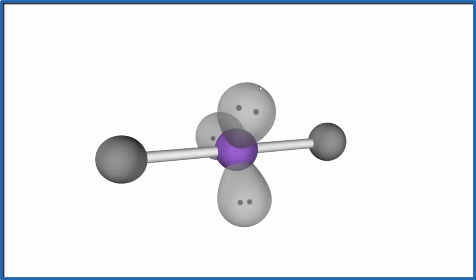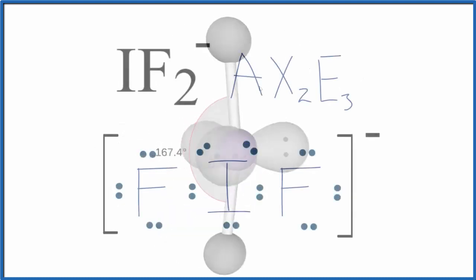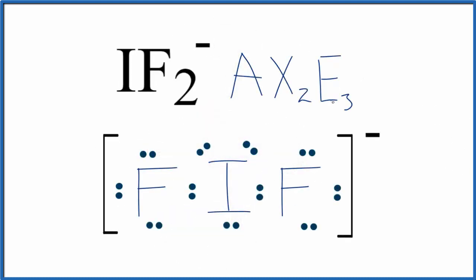Our molecular geometry, we have a linear molecular geometry. Bond angles, 180 degrees. Let's go back to our Lewis structure. So to recap, when we have two atoms and three lone pairs, we're going to have a linear molecular geometry, and then that electron geometry will be trigonal bipyramidal.